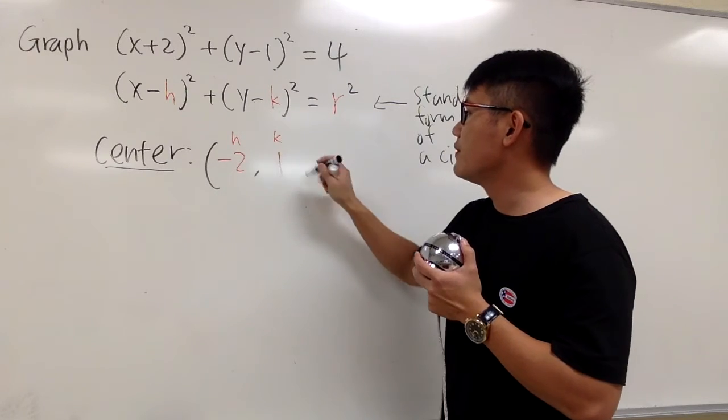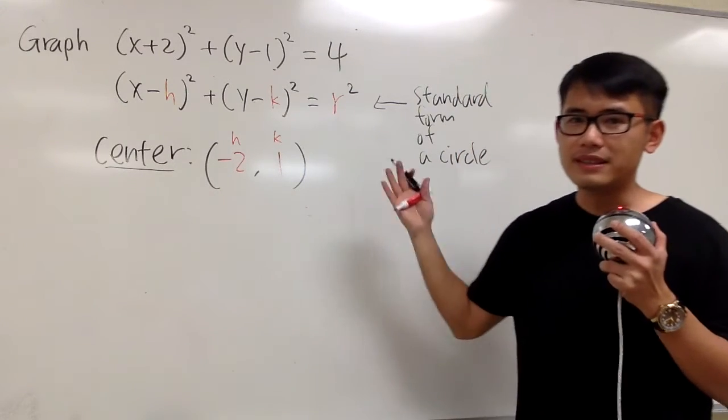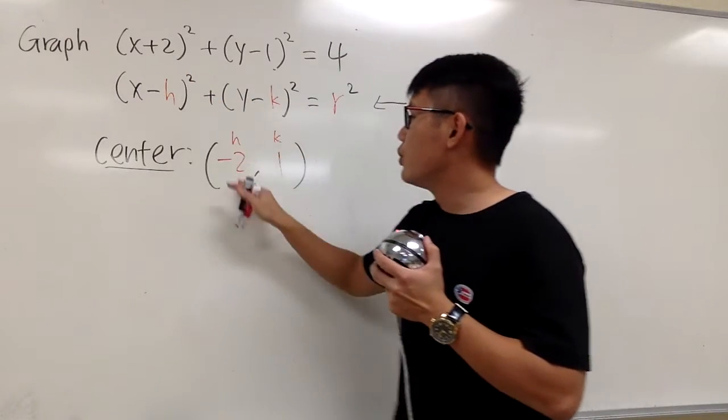Okay, the h value and the k value. So, that's the center. Negative 2 and 1.